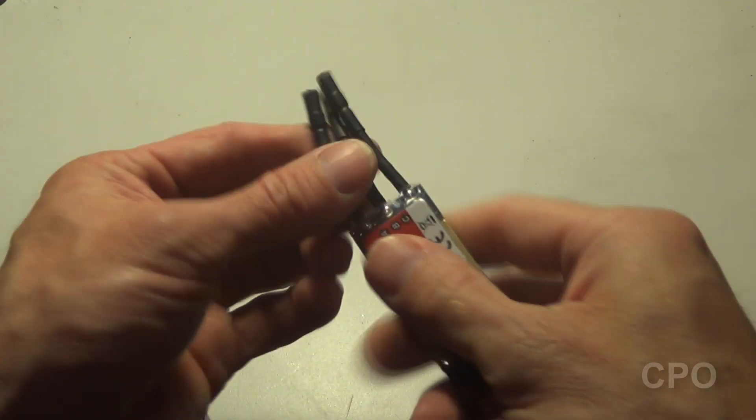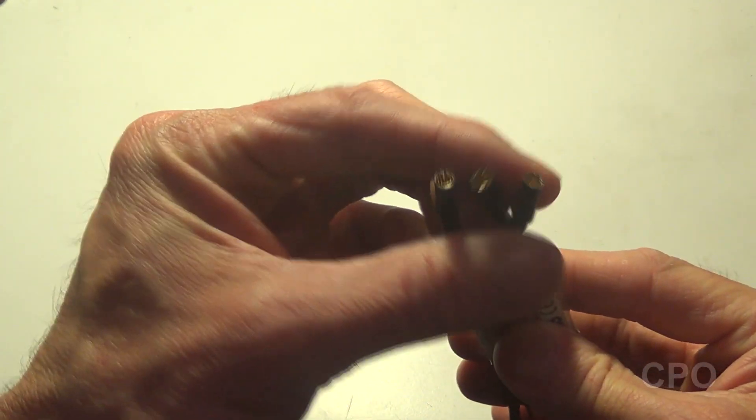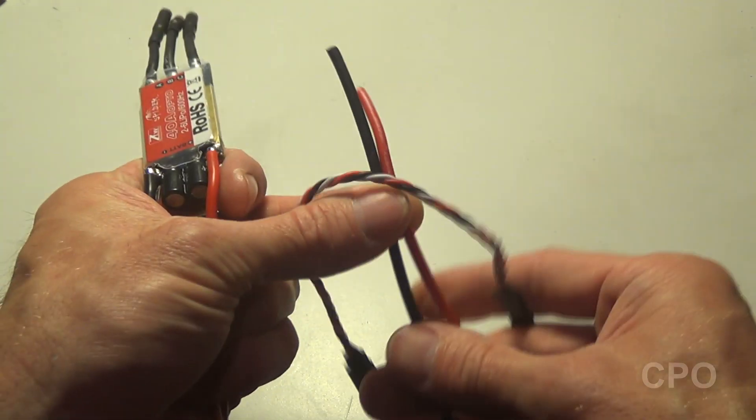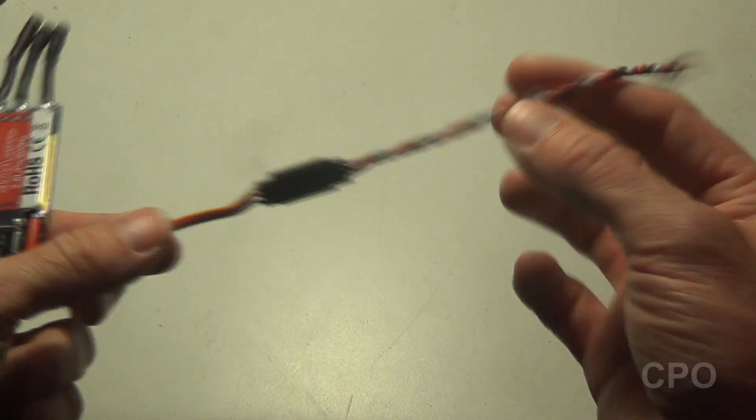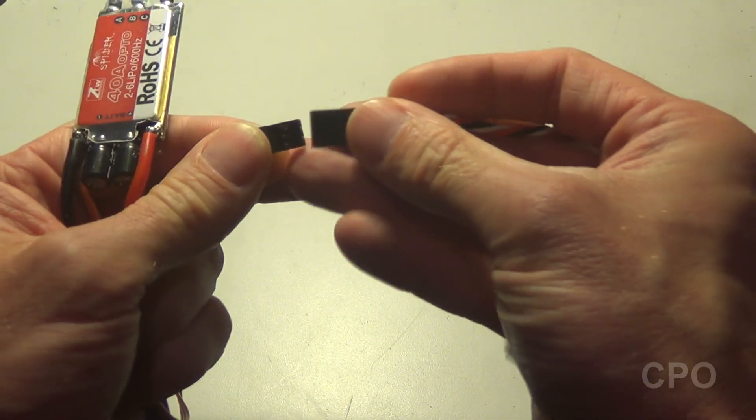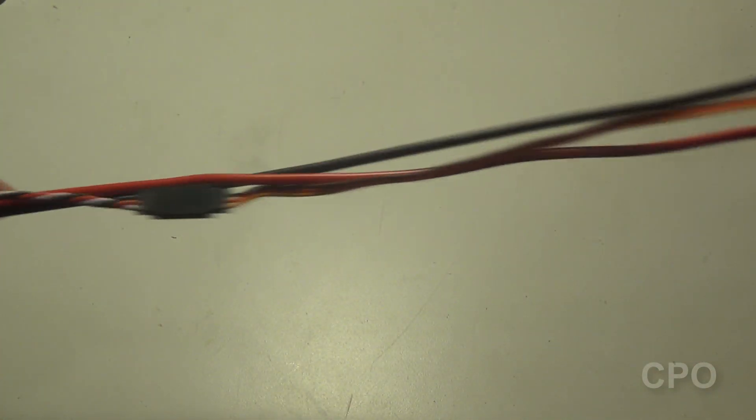So here's my completed ESC. Put my female bullet for the motor leads. Have my 16 inch extended battery wires. And then I also threw in this little servo wire extension, which is what we're going to need to connect to our flight controller. This probably isn't the one I'm going to use, it might not even be long enough, but just for demonstration purposes, since I had it laying around, I'll show you how this whole thing is going to work.